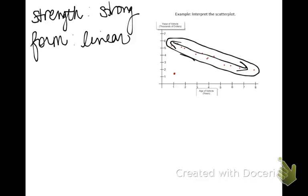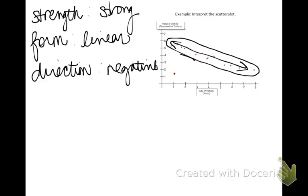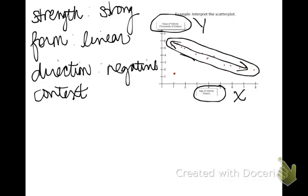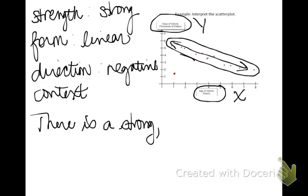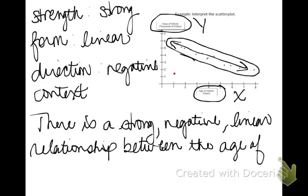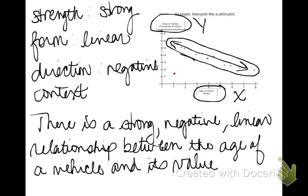The next thing to discuss is direction — positive or negative, are the values increasing or decreasing? Here, the overall direction is negative because it's a decreasing pattern. And then, context: we need to say in words that this scatter plot compares the age of a vehicle with the value of the vehicle. Putting these four things together: there is a strong, negative, linear relationship between the age of a vehicle and the value of a vehicle. I used the connecting word 'relationship'; you could also say 'association' or 'correlation.'